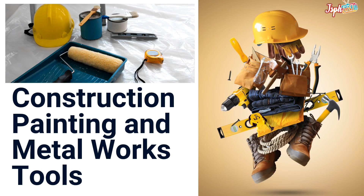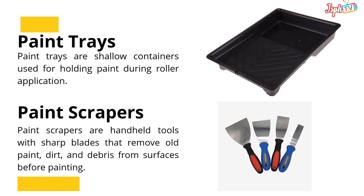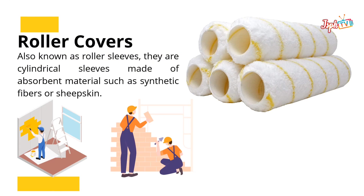Next, the construction, painting, and metalworks tools. Paint Brushes: Handheld tools with bristles used for applying paint to surfaces. Roller Frames: Handheld devices that hold a paint roller cover and facilitate smooth and even paint application. Paint Trays: Shallow containers used for holding paint during roller application. Paint Scrapers: Handheld tools with sharp blades that remove old paint, dirt, and debris from surfaces. Roller Covers: Also known as roller sleeves, they are cylindrical sleeves made of absorbent materials such as synthetic fibers or sheepskin.